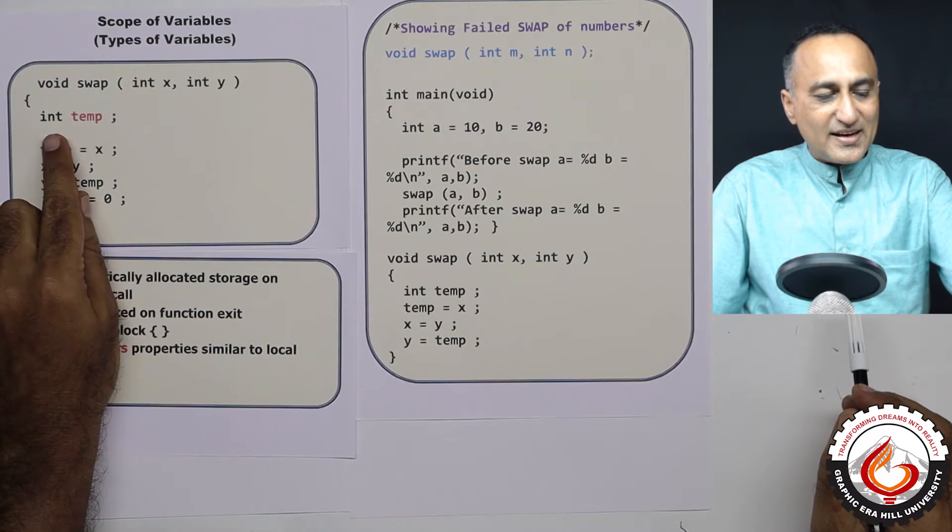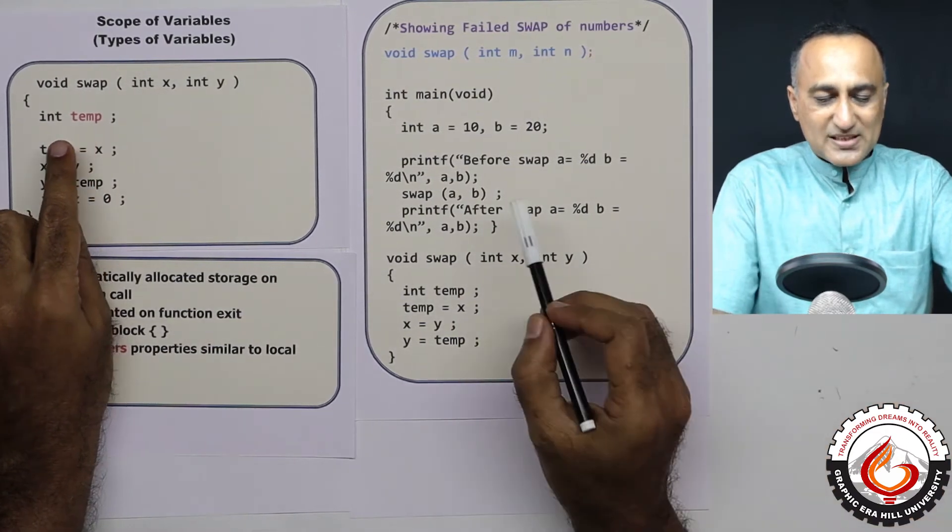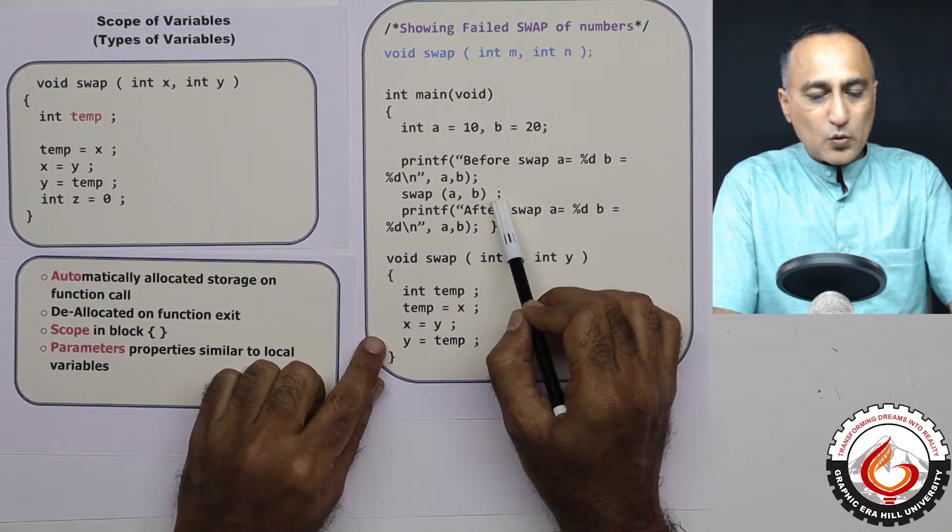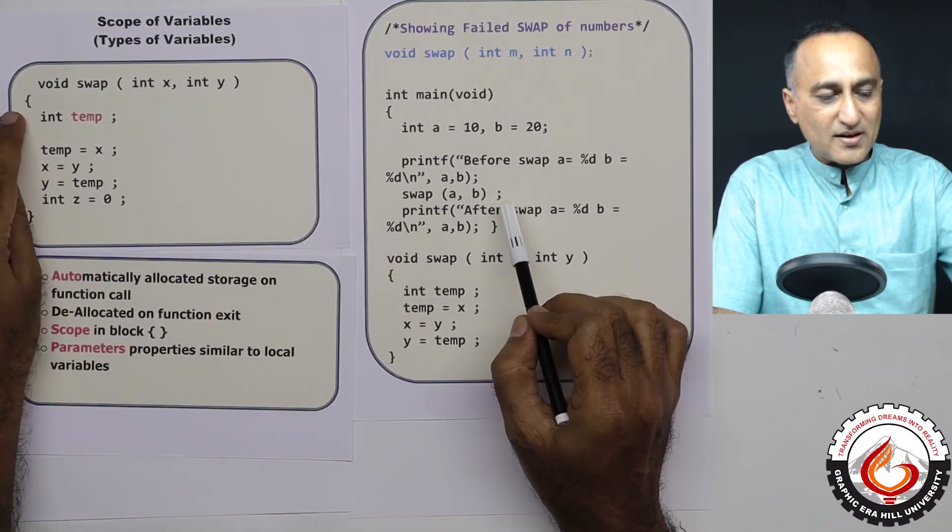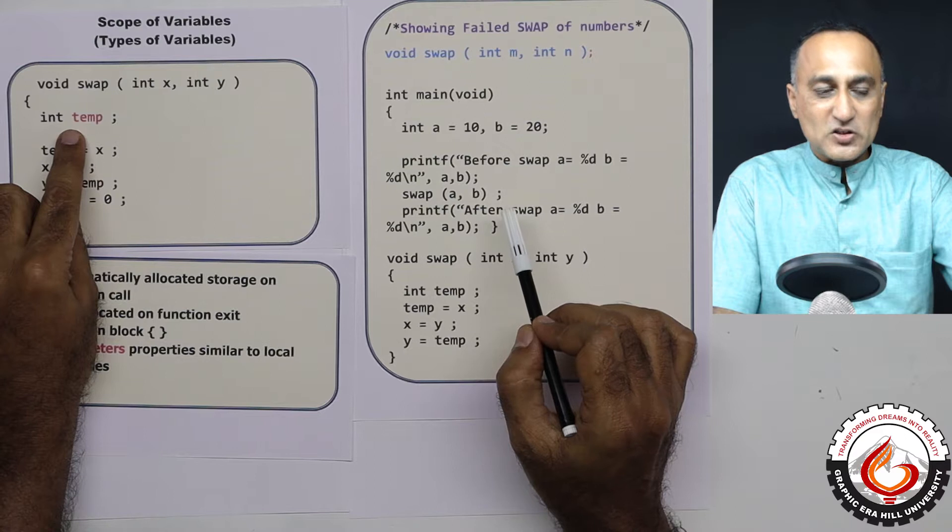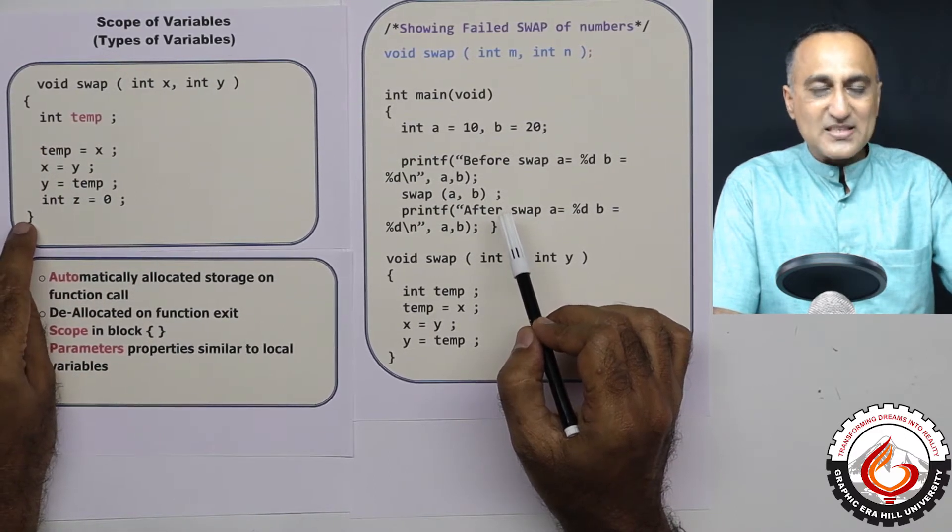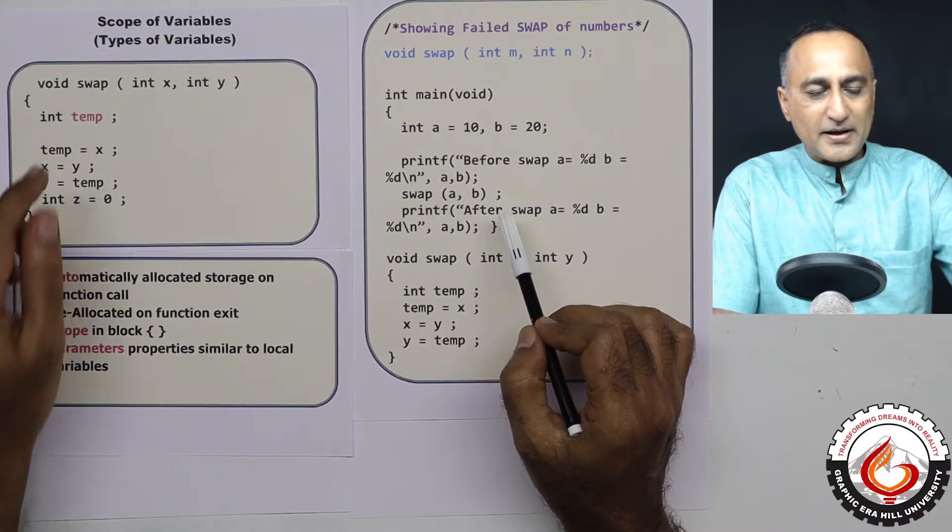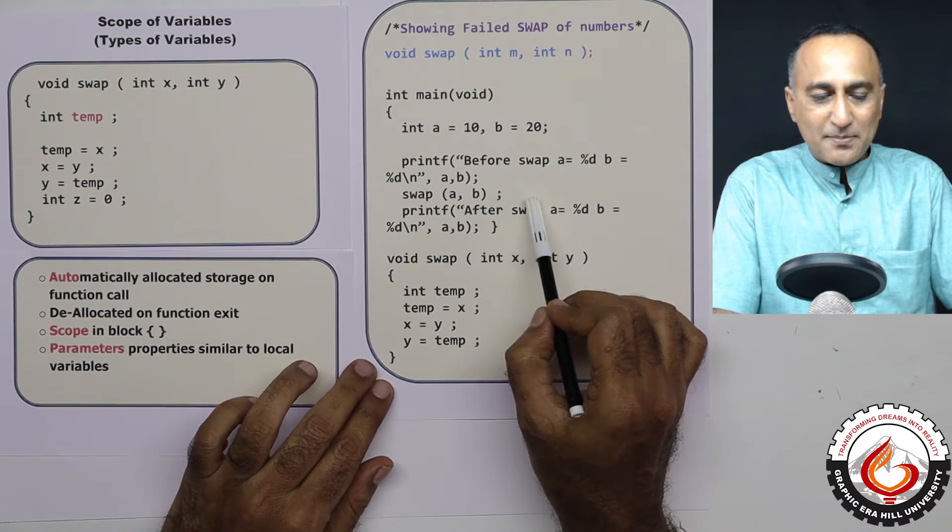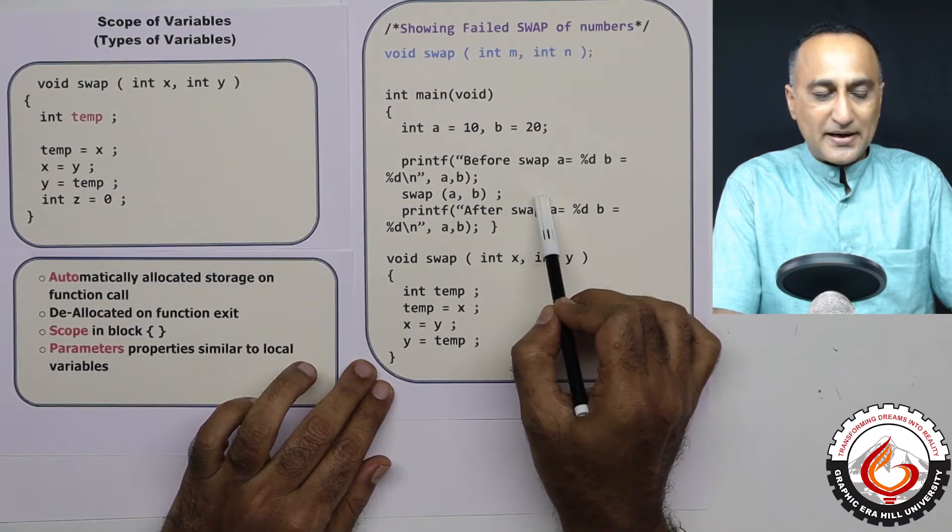And here it is declaring a local variable called temp. So what happens is, in this main, when I call swap a comma b, when the control comes here, this variable called temp is allocated space, and the minute this flower brace is encountered, all the space allocated for temp is destroyed. So if you try to print the value of temp here, or if you try to say %d temp, you're going to get a compile time error.